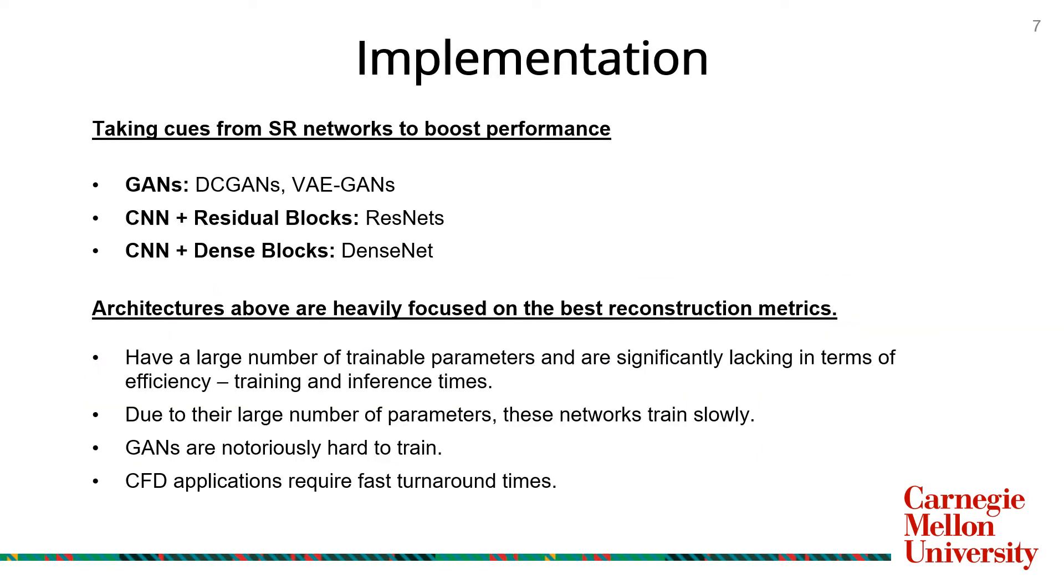Coming to our implementation, we took cues from state-of-the-art machine learning architectures for image super-resolution. These can be broadly classified into generative adversarial networks or GANs, such as DC GANs or VAE GANs, and convolutional neural networks with residual blocks like ResNets and DenseNets.